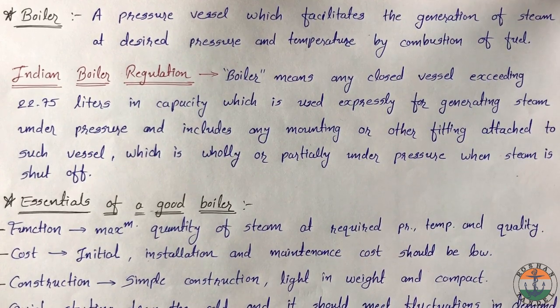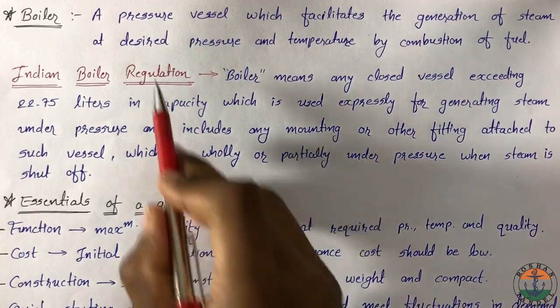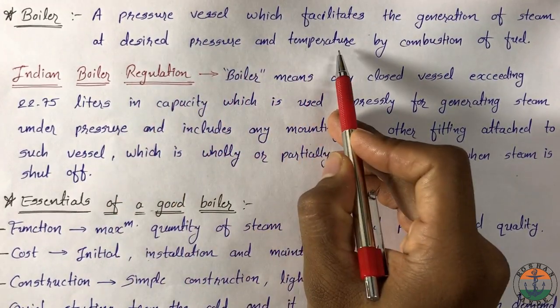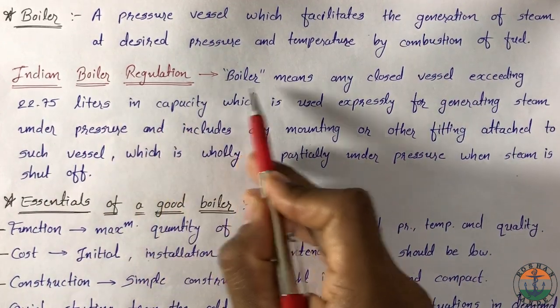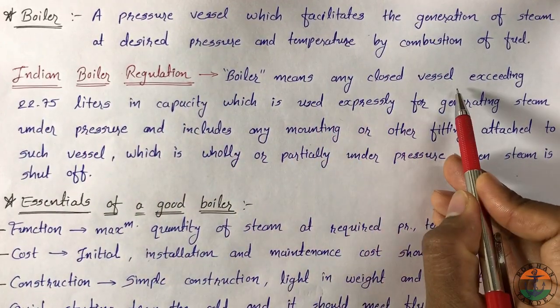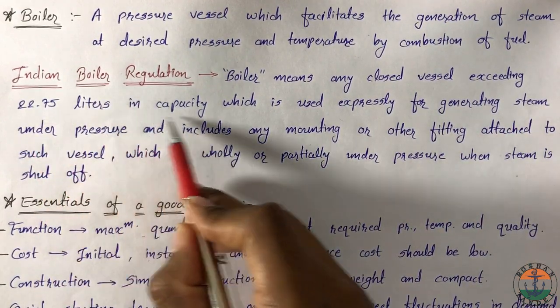A boiler is a pressure vessel which facilitates the generation of steam at desired pressure and temperature by combustion of fuel. According to Indian boiler regulation, boiler means any closed vessel exceeding 22.75 litres in capacity.